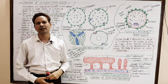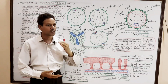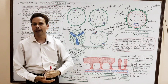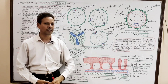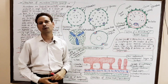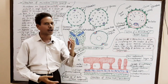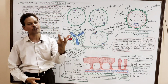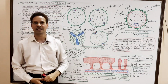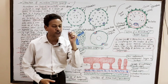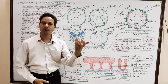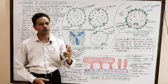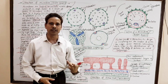In this lecture I will explain the structure of a pollen grain or microspore. These microspores are haploid, unicellular, uninucleate, microscopic structures. These pollen grains are derived from pollen mother cells (PMC) or microspore mother cells (MMC).